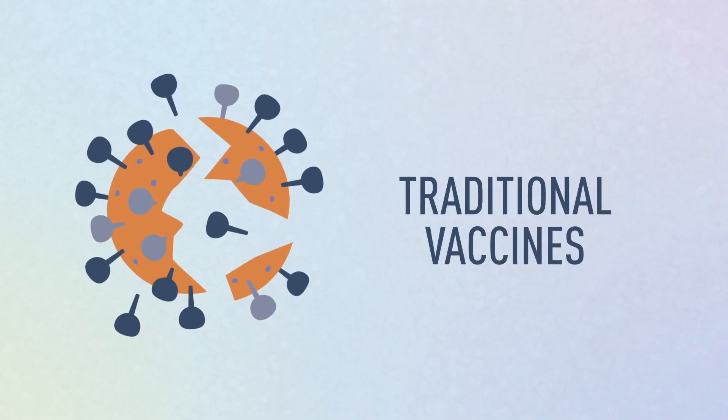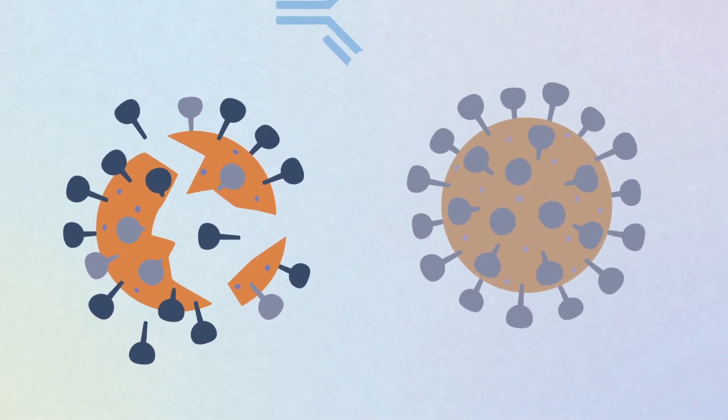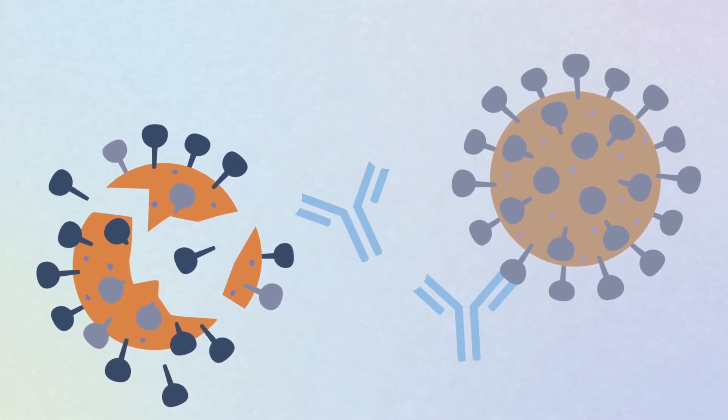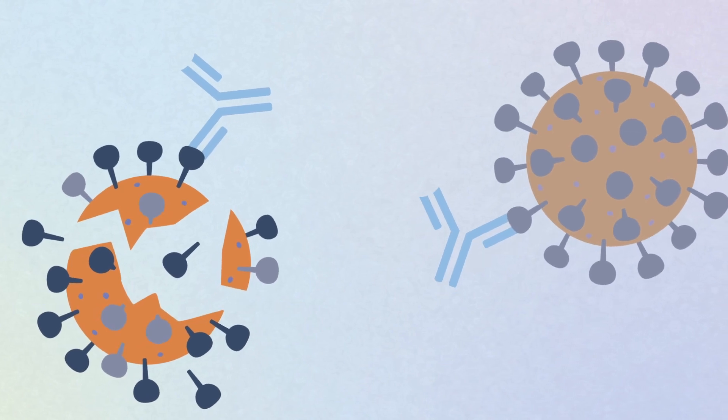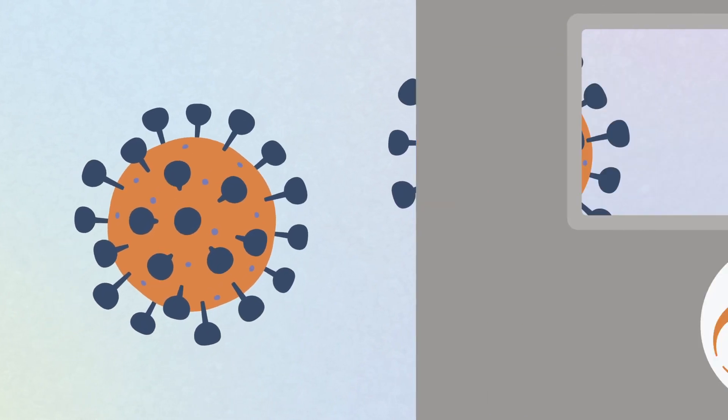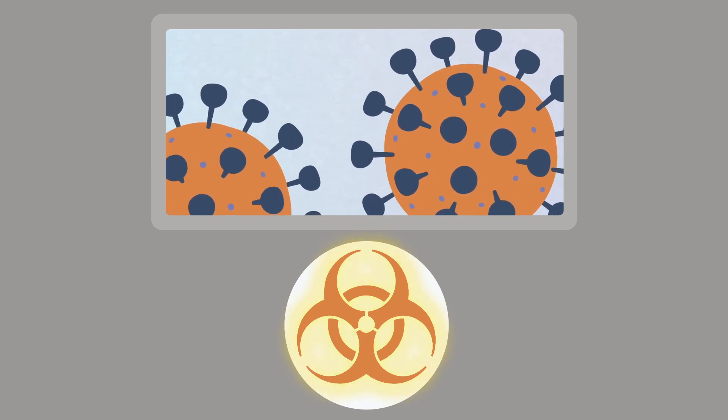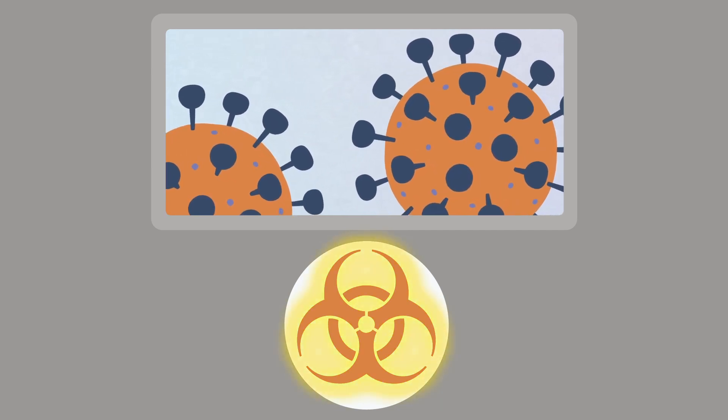Traditional vaccines use all or part of a killed or weakened virus to teach your immune system to recognize and act on those specific characteristics, without the virus ever entering the body. Because these vaccines start with live pathogen, they require extensive biosafety facilities and significant time and cost to develop.